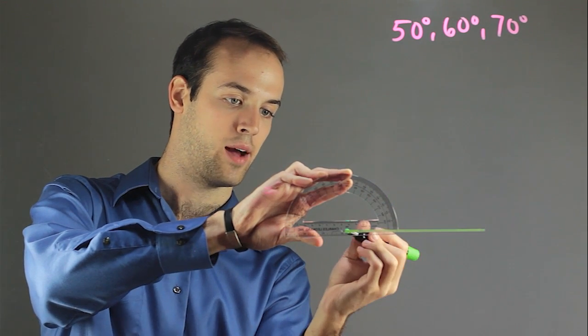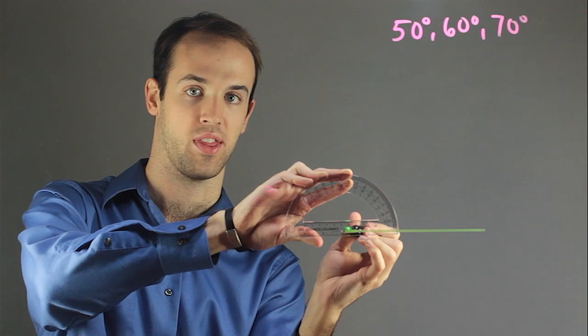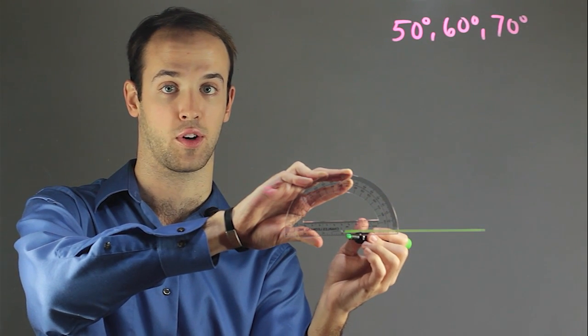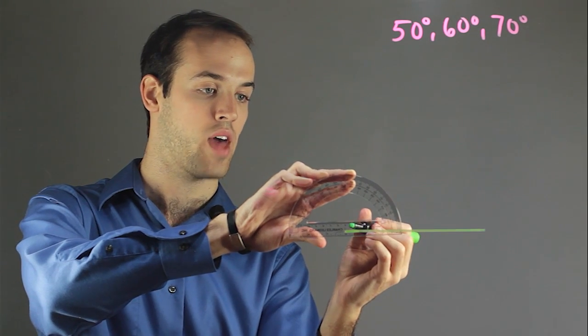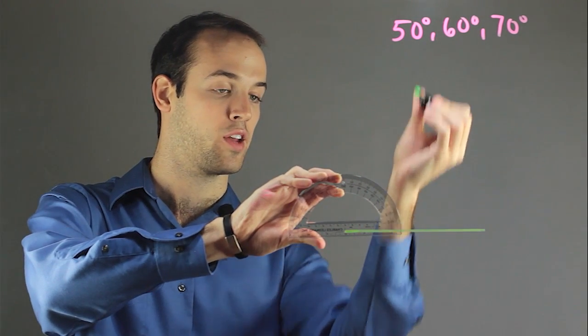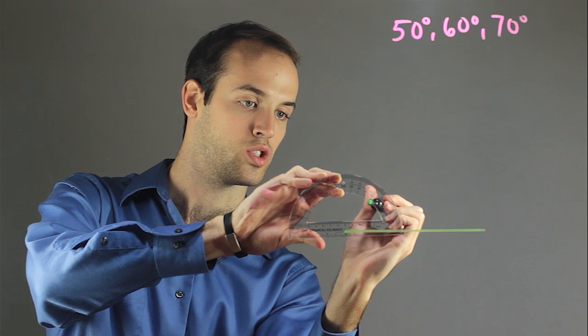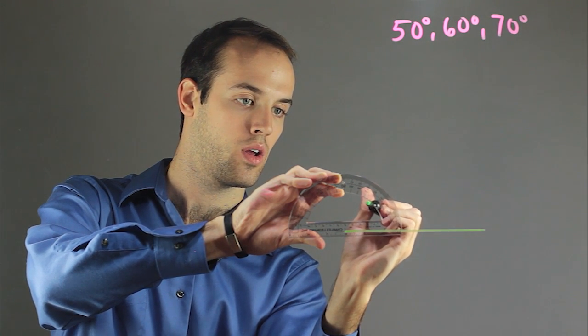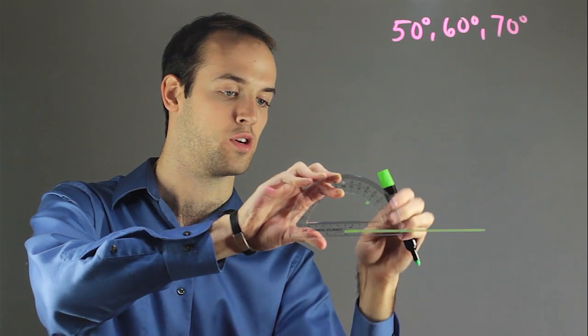And I also want to line up the tip of the base right here with this point right on this protractor. And all protractors have this little circle embedded into the bottom. So when I do that, I'm going to be looking for 50 degrees, which is right here. And I'm going to draw a point right there at 50 degrees.